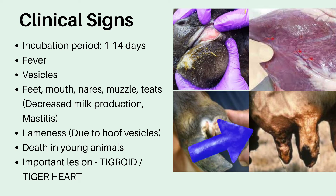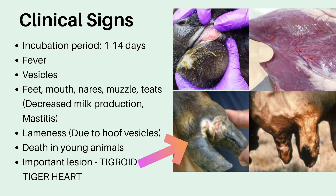The vesicles may also be present in the nares, muscles, and teats of the cattle. If the teats are affected, there will obviously be decreased milk production and this may also lead to mastitis. As for the vesicles in the hoof, the animal will not be able to walk properly — its gait will be abnormal, causing lameness. There is also death in young ones, and the most important lesion is the tigroid or tiger heart.